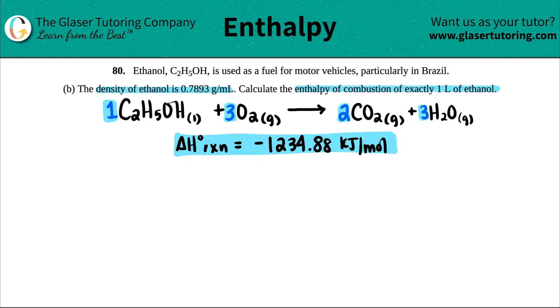Okie dokie. So in part A, we basically found out how to get this balanced equation of the combustion of ethanol, as well as the delta H value. So if you didn't do A and you want to see where we got these numbers, you could go back one video on the playlist. But we're moving on.